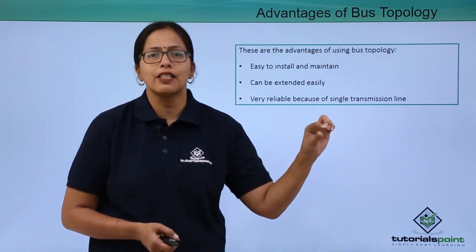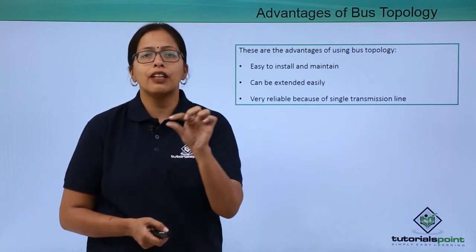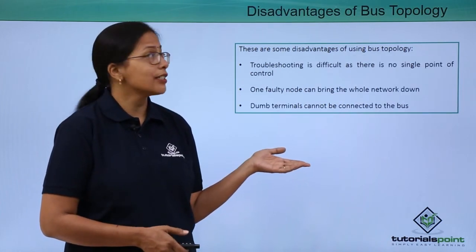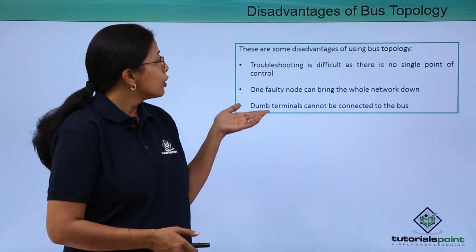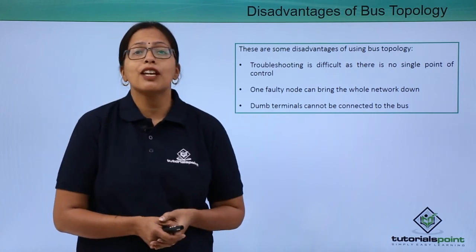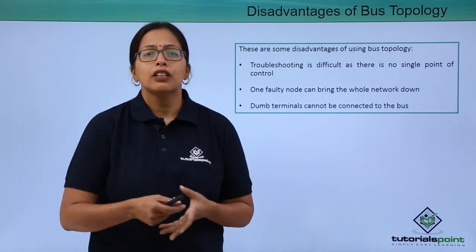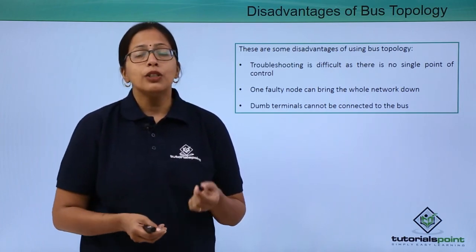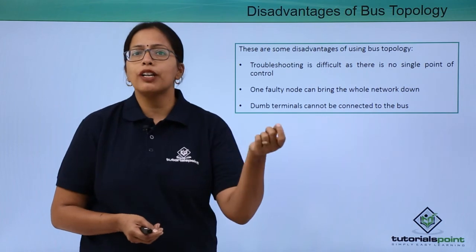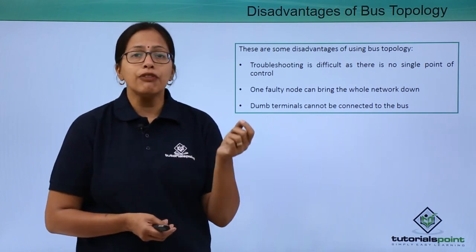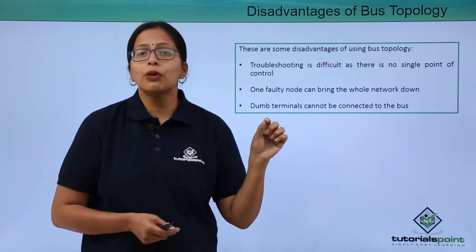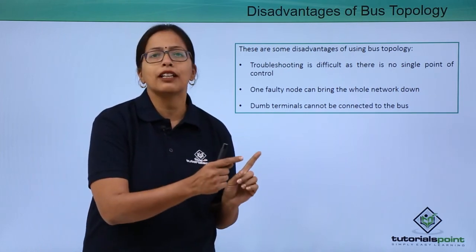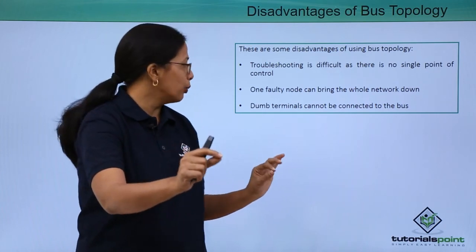There is just one central line transmitting, so it is reliable, but it still has some disadvantages. Troubleshooting is very difficult because there is no single point of control — messages go in all directions at the same time, so you can never know at which point it has broken down. If even one single point, one node or one length of cable, is not working, the whole line will go down.